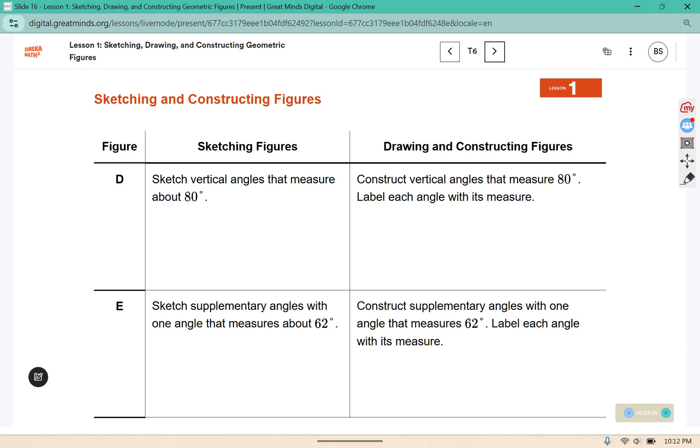Sketch vertical angles that measure about 80 degrees. Vertical angles are angles that cross or intersect with lines. 80 degrees is just under 90, so it should almost create an L shape.